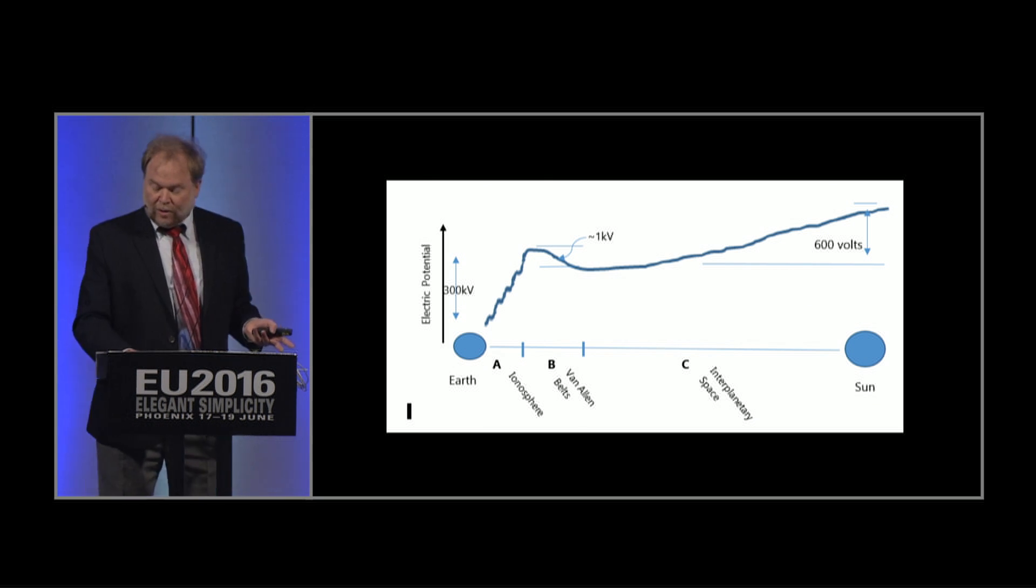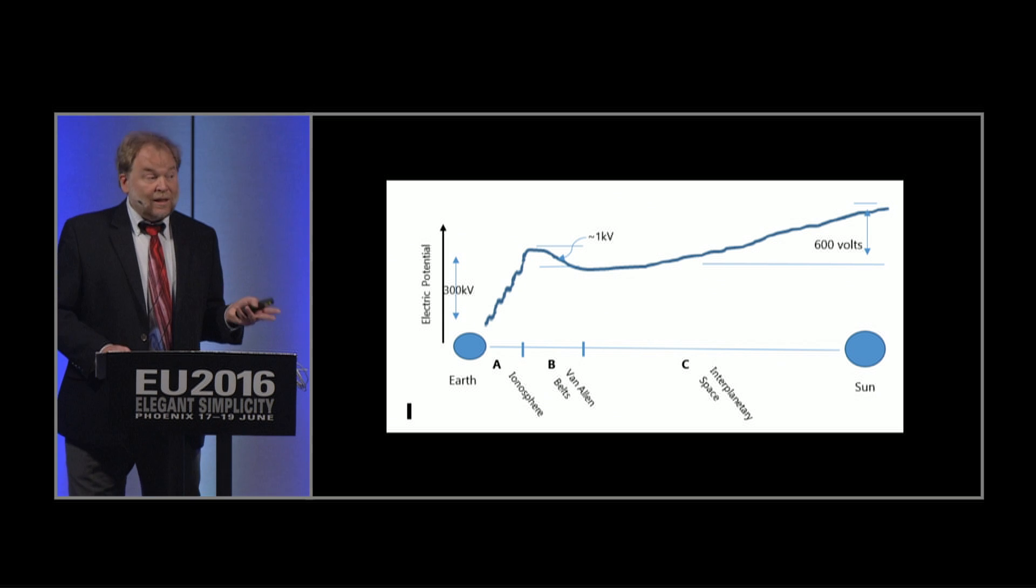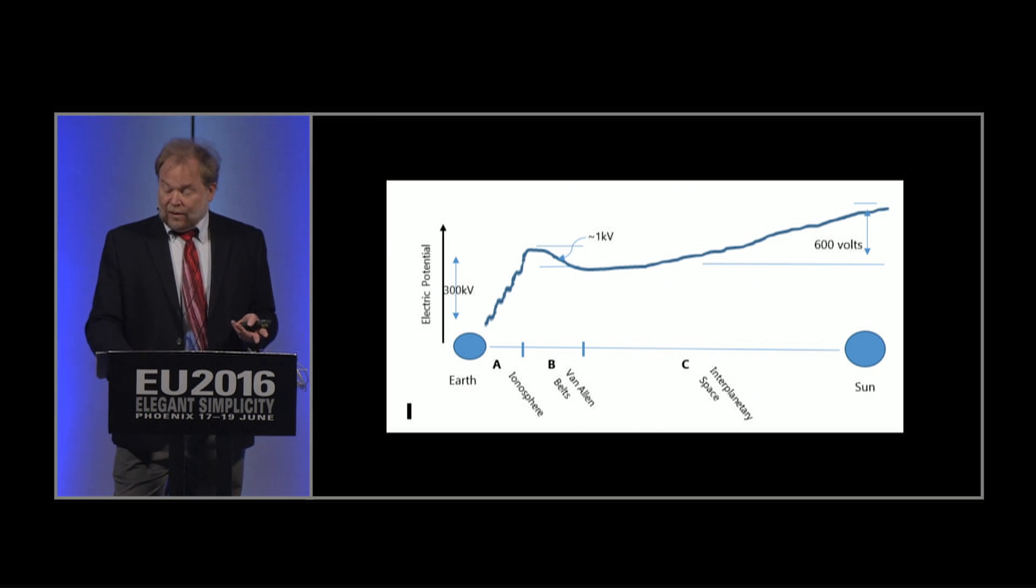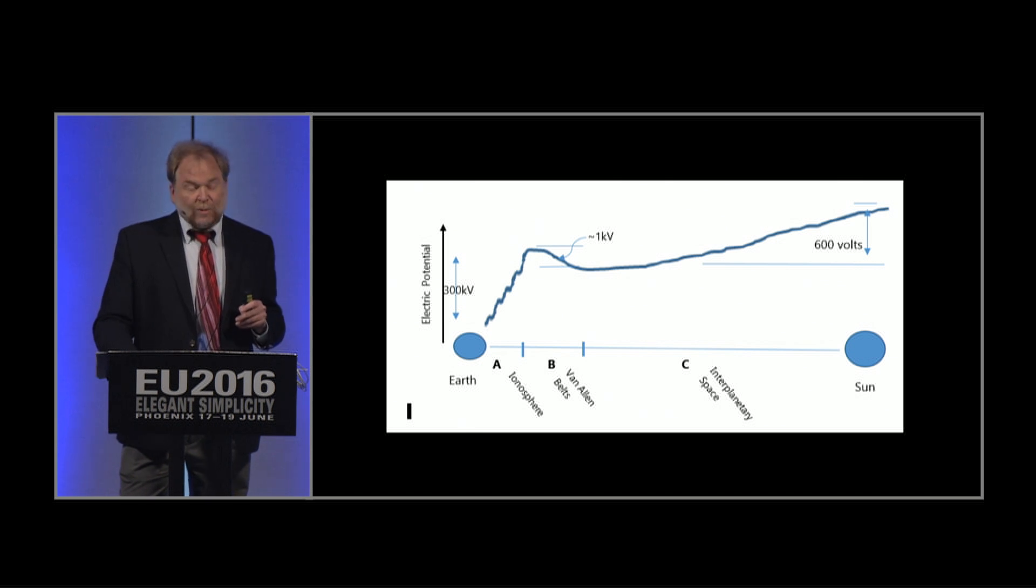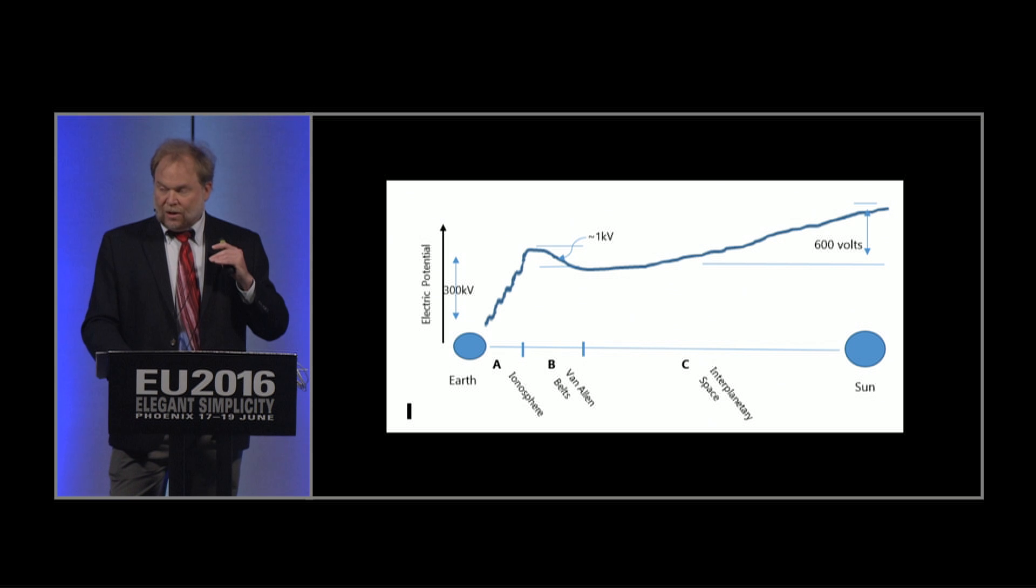What about the squiggles? Why did I put those in there? I put those in there because in the laboratory, a large electrical potential change in plasmas almost always happens in steps. It doesn't go smoothly. It doesn't go all at once. It almost always goes in steps. So I put steps in there because that's what one sees in the laboratory.